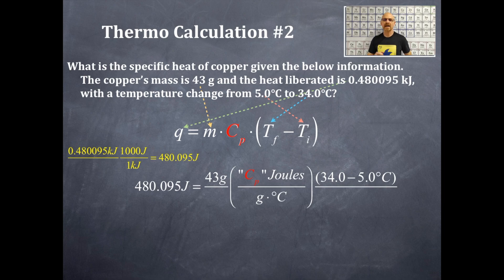The mass term is 43 grams. The specific heat capacity is the red CP and you should see that I put in the units for the specific heat capacity, which is joules per gram degree Celsius. Then on the far right hand side of this, you should see that I have the final temperature at 34.0 minus the initial temperature at 5.0 degrees Celsius.